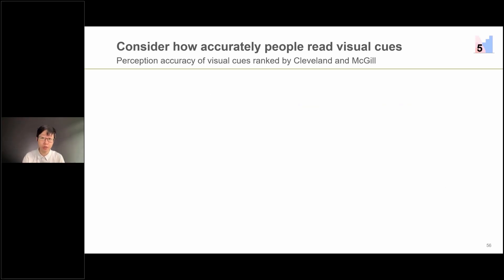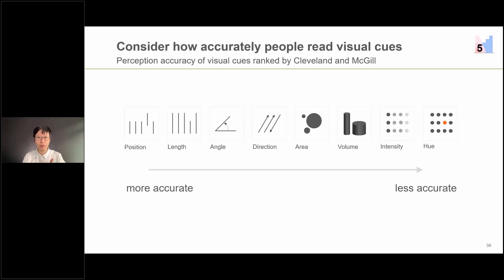So to guide you in choosing your chart, this study by Cleveland and McGill can be useful. They looked at what makes a chart accurately understood by people. You could use any of the following to encode quantitative information: position, length, angle, direction, area, volume, intensity, and hue. And when you go from left to right, the visual cues decrease in accuracy.